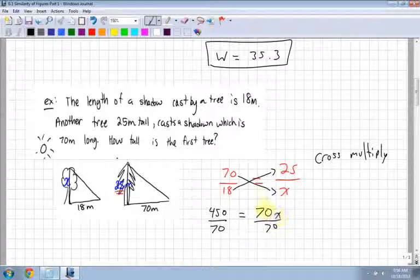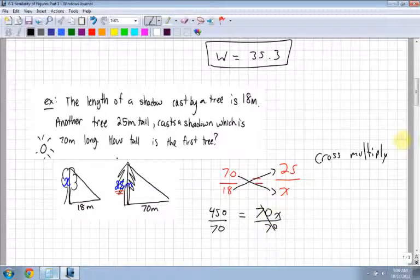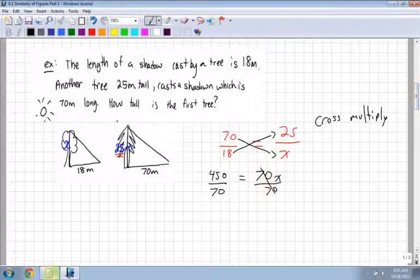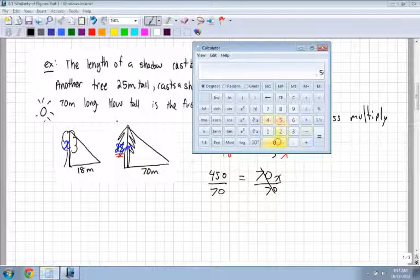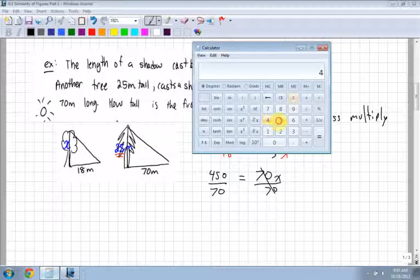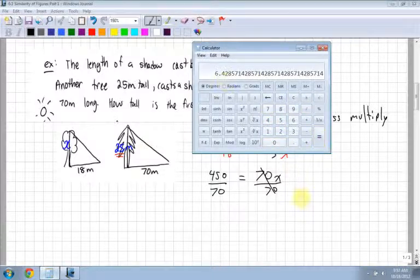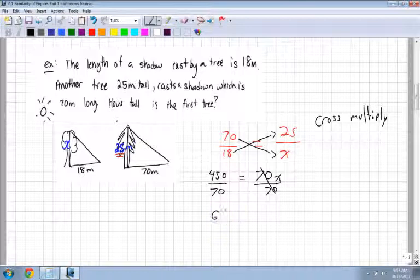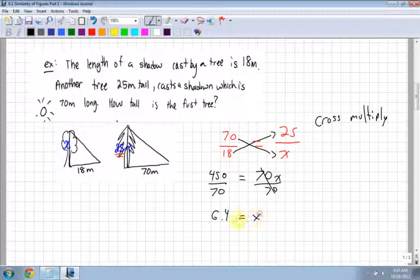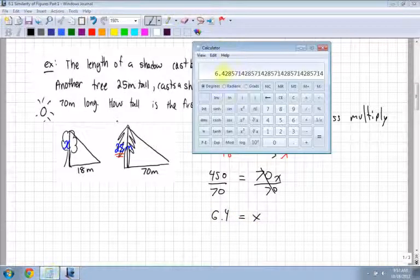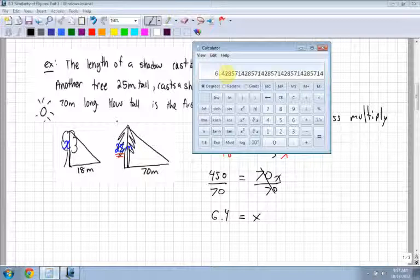Those two 70s cancel each other out, and I'm left with just 1 on that side. Then 450 divided by 70 is 6.4. So 6.4 equals my x. Notice I rounded down to 4 because the 2 beside it is less than 5.